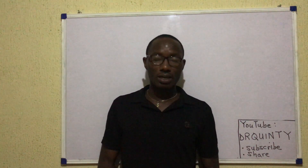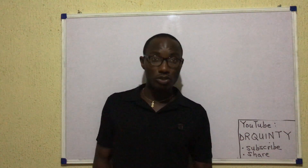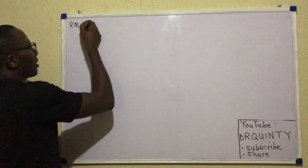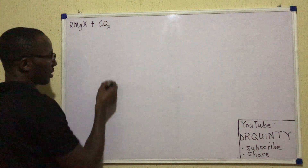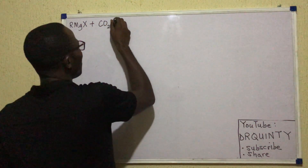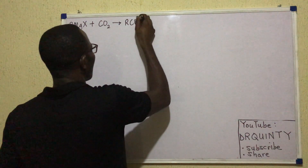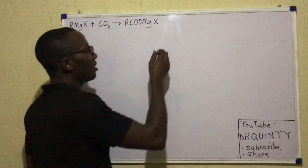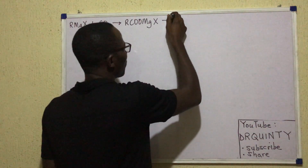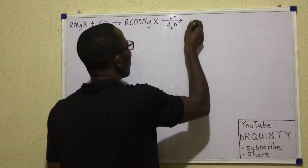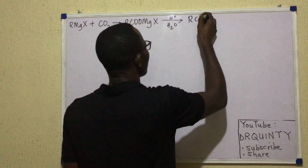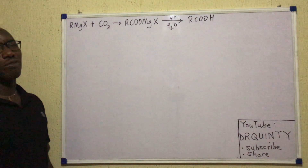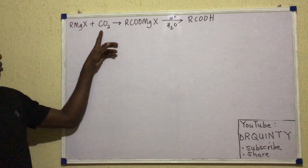Grignard reagents, as we saw under carbonyl chemistry and alcohol chemistry, are compounds of formula RMgX. When they are reacted with CO₂ (carbon dioxide), we get intermediates that can be represented as RCOO⁻ MgX⁺. When this intermediate is hydrolyzed with H⁺ and H₂O, we get RCOOH.